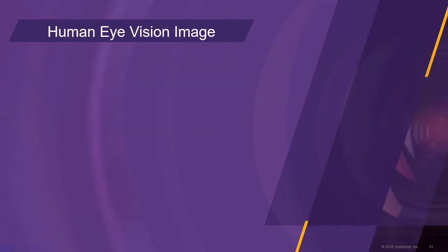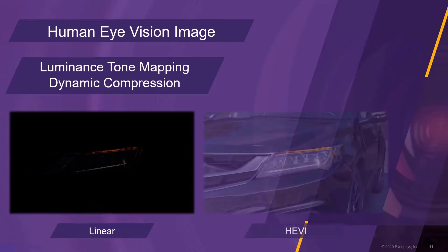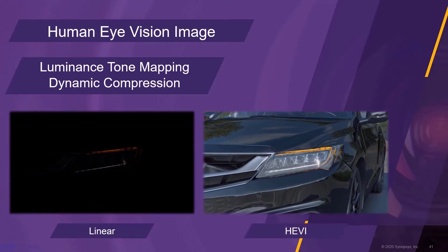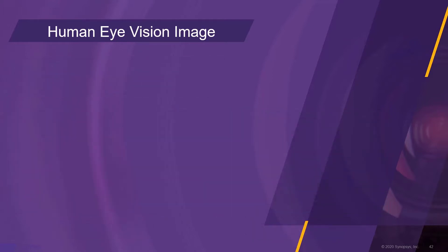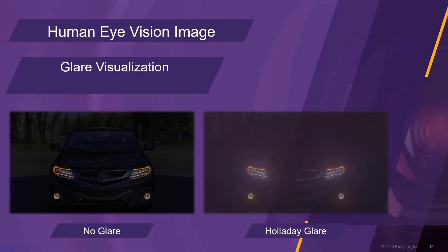The human eye vision image tool provides a sophisticated luminance tone mapping algorithm. It performs the dynamic compression of the luminance values into the tone range of a regular sRGB monitor. Another feature of the human eye vision image tool is the glare post-processing. Multiple scientific glare algorithms are available. In this example, the Halliday glare algorithm was applied.